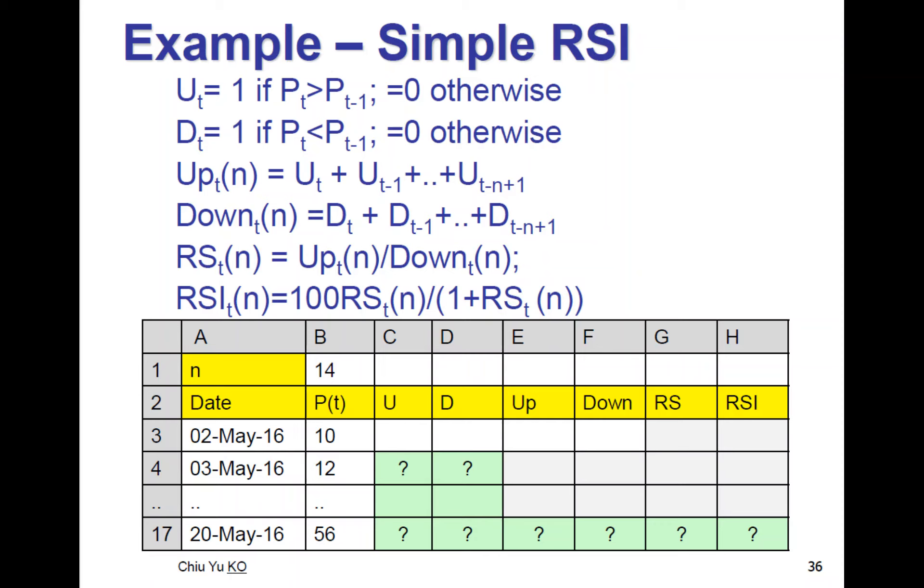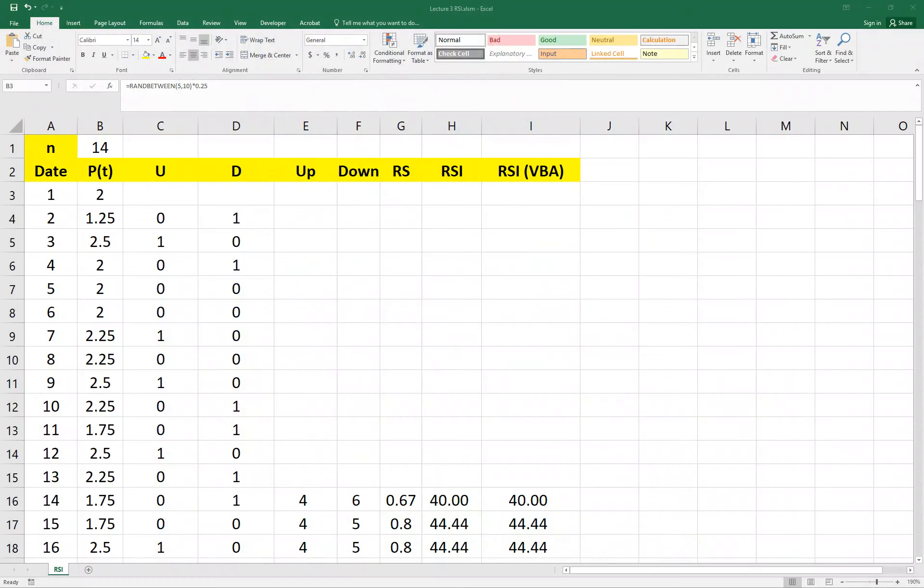And then you calculate U as column C, D as column D, and then Up as column E and Down as column F. And RSI is the ratio of Up to Down, and then RSI is normalized. So let's see the Excel spreadsheet here.